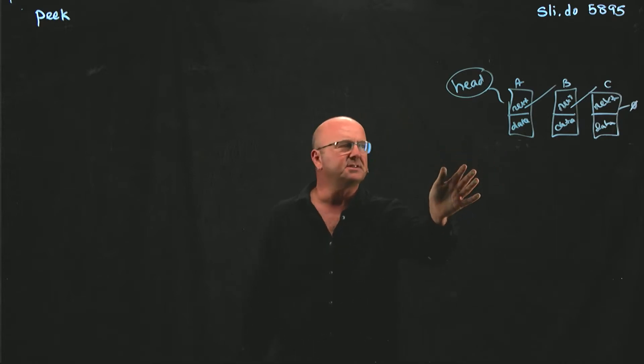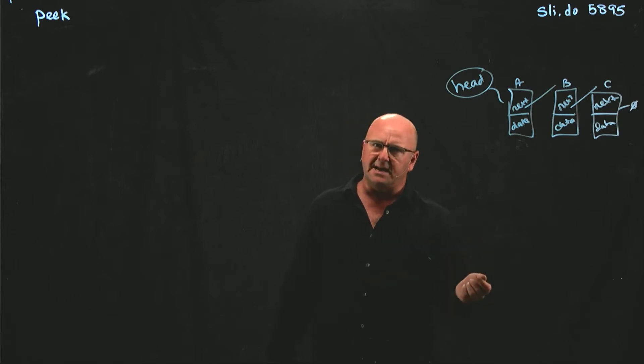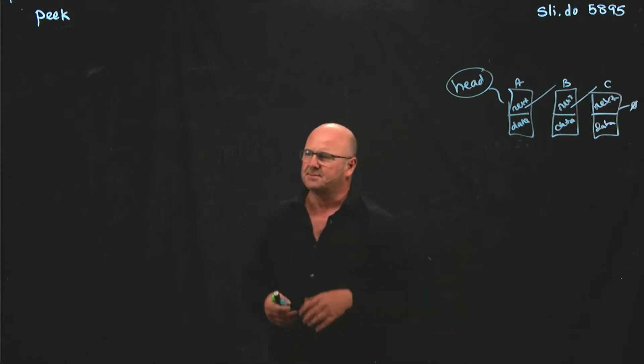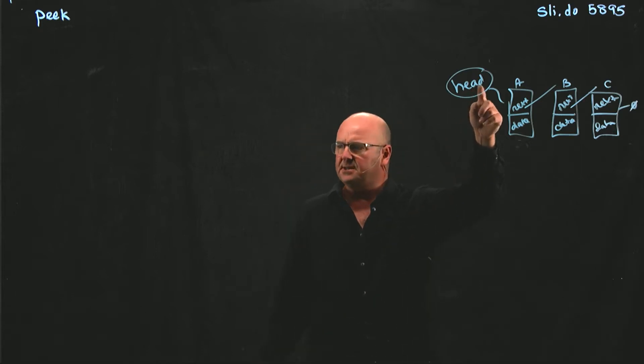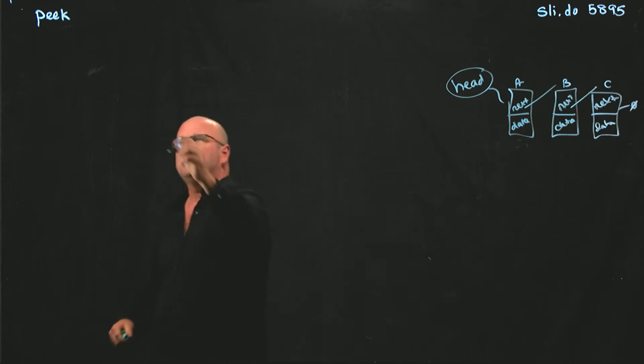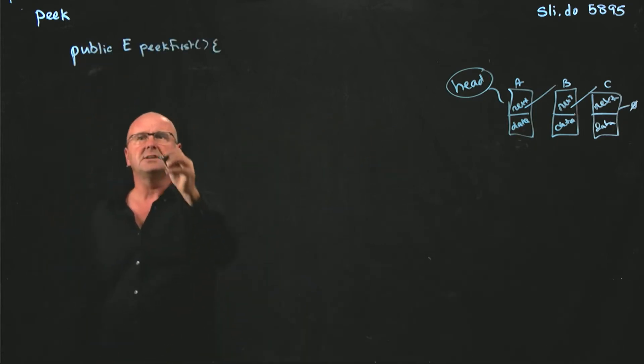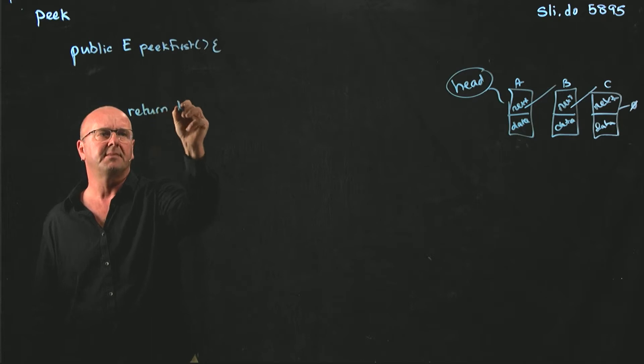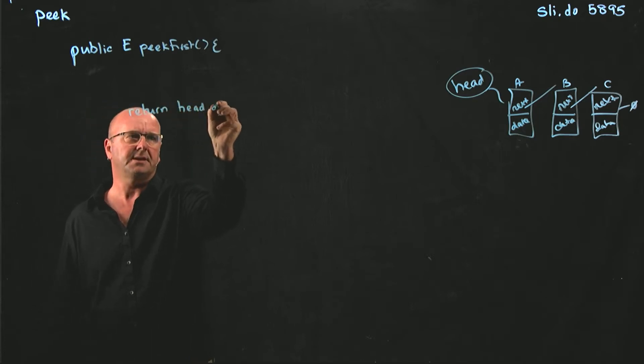One way you could implement that of course is to do a remove first, you get the element back, and then do an add first to put it back in the same spot. But that's kind of a waste of time to keep doing those manipulations. All we need to do is get our head pointer and say what's head.data. So our peak first method is just going to return head.data.